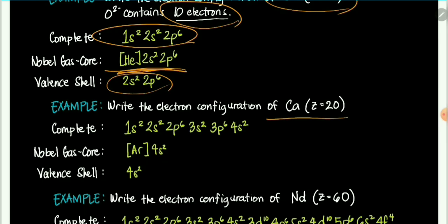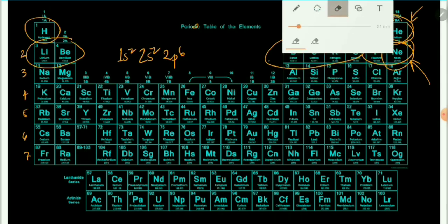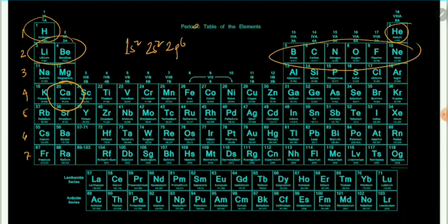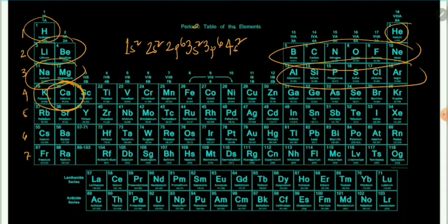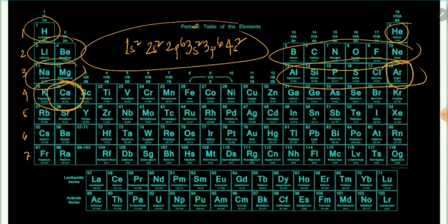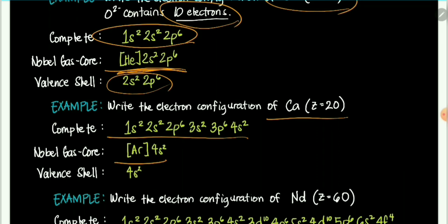For calcium, locate it on the periodic table — period 4, group 2. The electron configuration is: 1s2, 2s2, 2p6, 3s2, 3p6, 4s2. For the noble gas core configuration, argon comes before calcium, so we write [Ar] 4s2. The valence shell electron configuration for calcium is 4s2.